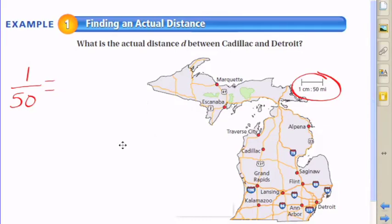To determine how far Cadillac is from Detroit, the first step is to simply use that scale - the fact that one centimeter on the map is 50 miles. I'm honing in on the two cities here. There's Cadillac to Detroit.